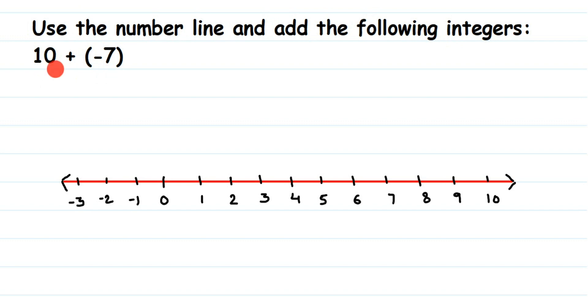When you're adding integers on a number line, if you're adding a positive number, then you should move towards the right side of the number line. And if you're adding a negative number, then you should move towards the left side on the number line.